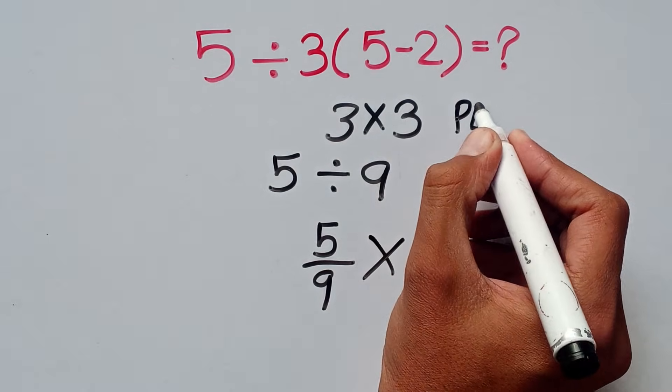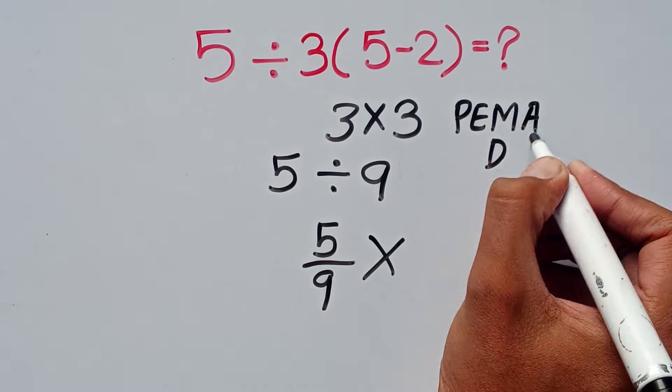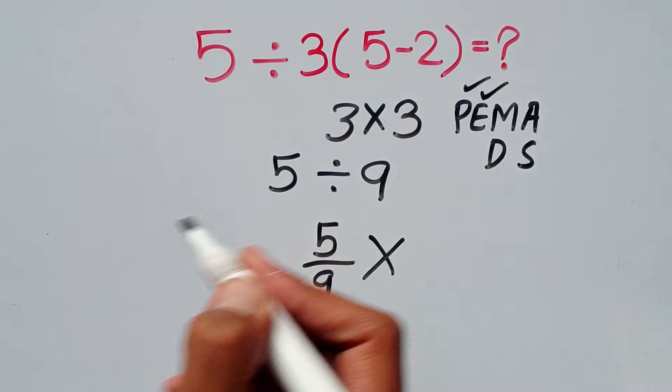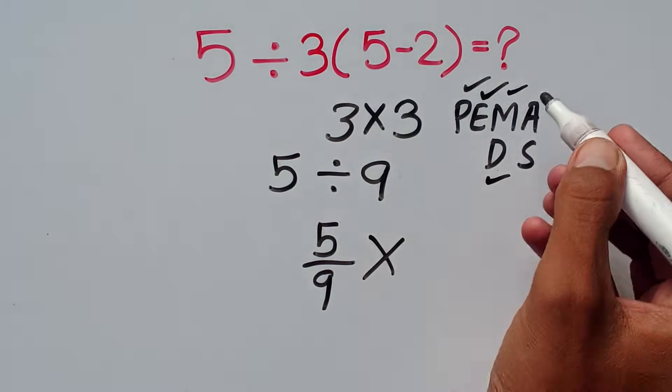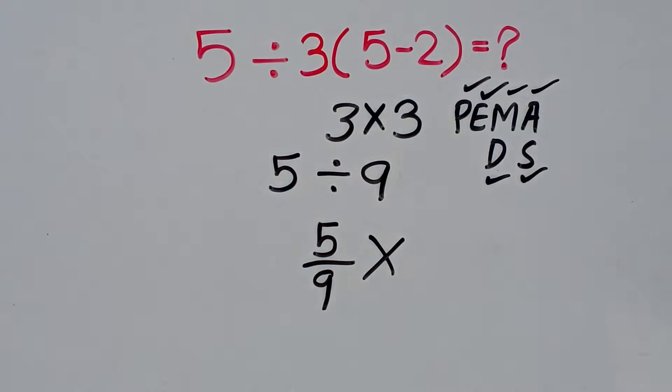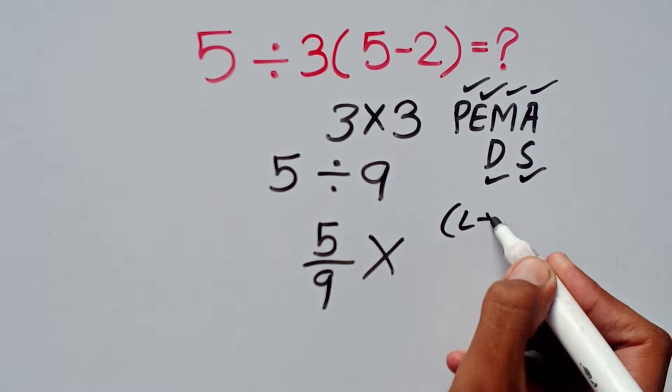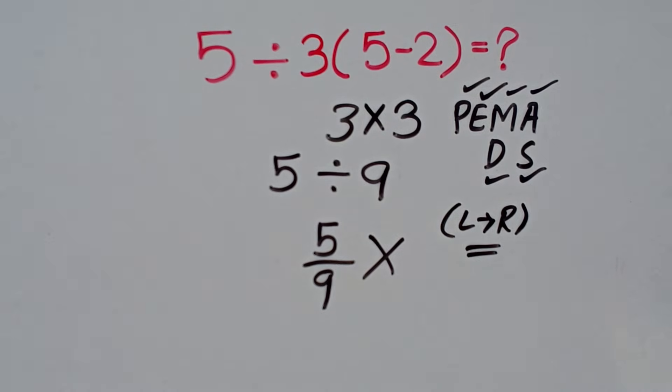Because of the order of operations, which is called PEMDAS rule. First, we solve parentheses, then exponent, then multiplication and division, after that addition and subtraction. Multiplication and division have equal priority, and we always solve from left to right.